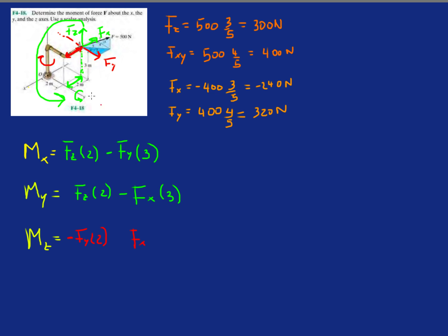And FX. FX, I have to shift it two meters in this direction. So the line of action intersects z. And that will be positive. So FZ will cause a torque that goes around this way on the z-axis.